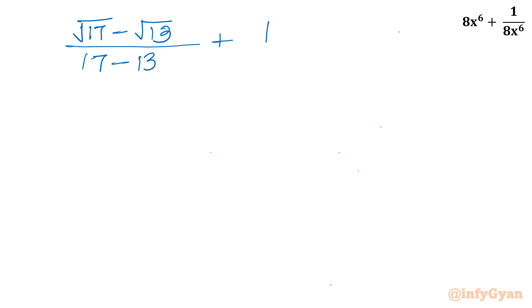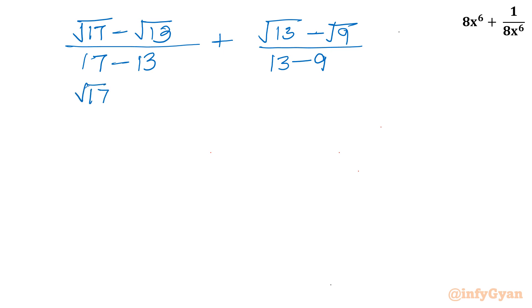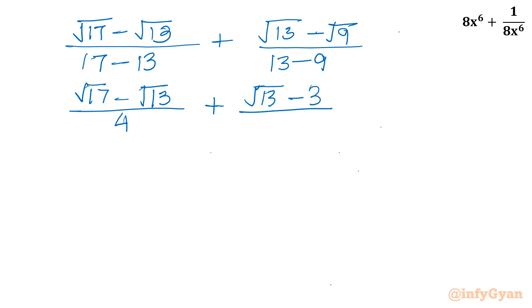So we get (√17 − √13) divided by 4, plus (√13 − √9) divided by 4 — and √9 is 3, so (√13 − 3) divided by 4. This is our x.